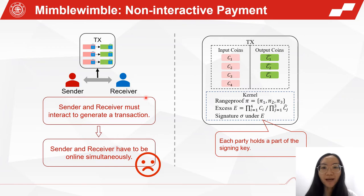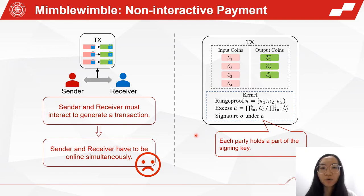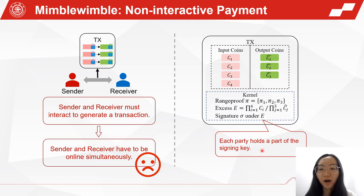MimbleWimble has a drawback that impacts its usage in practice. The sender and the receiver must interact to generate a transaction, which means the two parties have to be online at the same time. This is because in each transaction a signature under the excess E is needed; however, each party holds a part of the signing key, so the two parties need to interact to generate the signature.